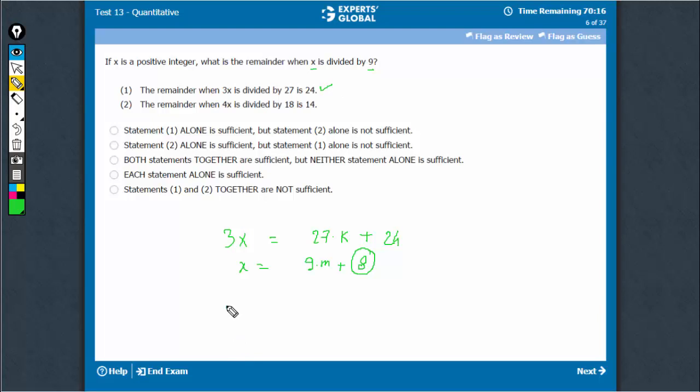Coming to statement 2, 4x is equal to 18k plus 14. Therefore, the value of x cannot be determined. If you say x, this will become 4.5k plus 3.5. It's difficult to say what remainder will x give with 9 because we don't have a 9k here.